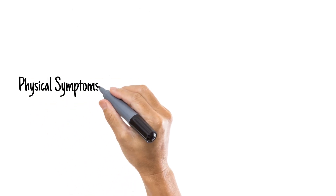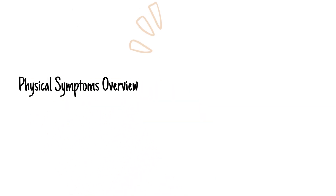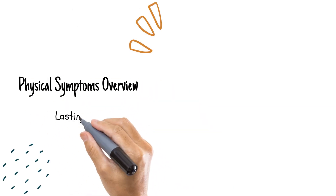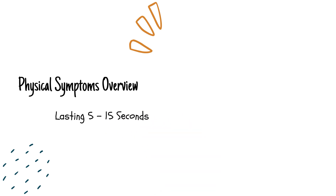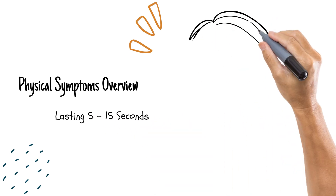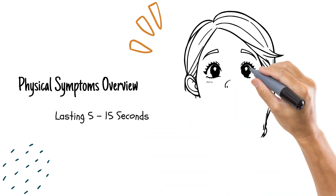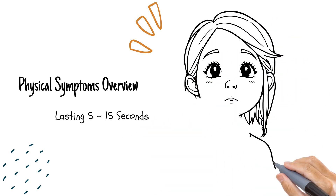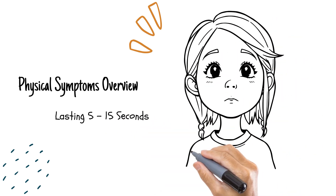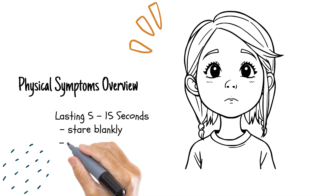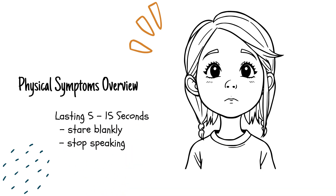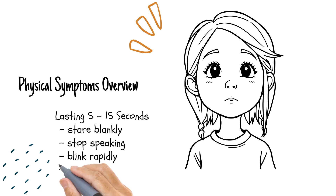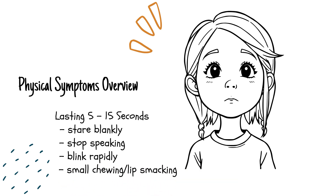What are the physical symptoms? The hallmark symptom is a brief lapse in awareness, often lasting between 5 and 15 seconds. During this time, the child may stare blankly, stop speaking mid-sentence, blink rapidly, or have slight eyelid fluttering, and they may even make small chewing or lip-smacking motions.